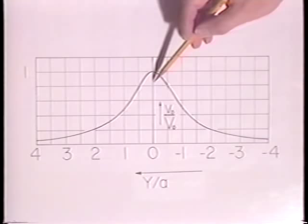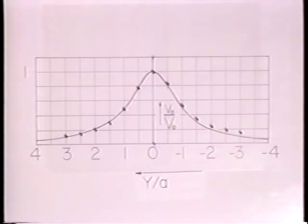To test the prediction of the shape of this distribution, we have taken these data points. So that the shapes can be compared, the probe voltages have been normalized to the value V0 measured at y equals 0.